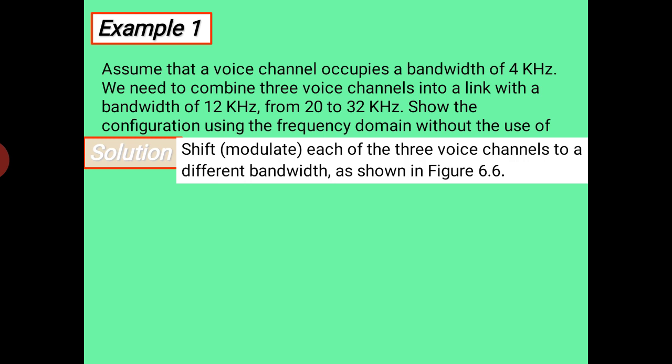Hello students, today we will start numericals for multiplexing. The example is: assume that a voice channel occupies a bandwidth of 4 kilohertz. We need to combine 3 voice channels into a single link with a bandwidth of 12 kilohertz.